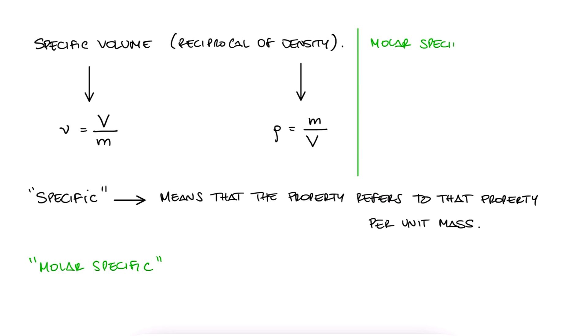The molar specific volume refers to the volume per kilomole. This means that the molar specific volume is obtained by multiplying the specific volume, which is in cubic meters per kilogram, by the molecular weight of the substance, which is kilograms per kilomole.